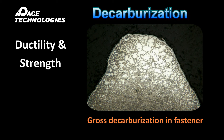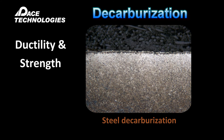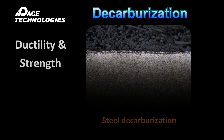Decarburization is a defect which can occur when carbon is lost at the surface of the steel when it is heated to high temperatures, especially in hydrogen atmospheres. The loss of carbon can reduce both the ductility and strength of the steel. It can also result in hydrogen embrittlement of the steel.